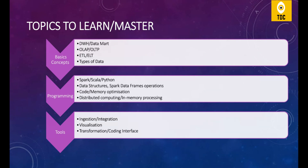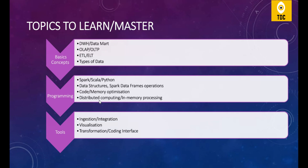Data structures are also important — at a basic level for most, but if you're targeting large product-based companies, you should master them. Spark DataFrame operations are another key concept because as a data engineer you will mostly play with data using Spark DataFrames. Code and memory optimization is also crucial — if your code is not optimized, it's of no use. Focus on how to optimize code, handle memory optimization, handle out-of-memory exceptions, and fine-tune your data pipelines.